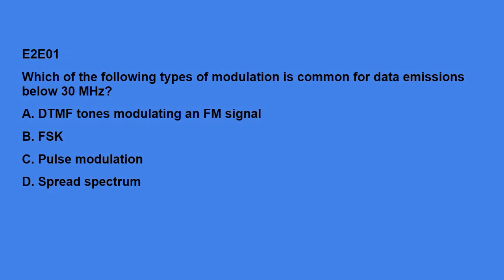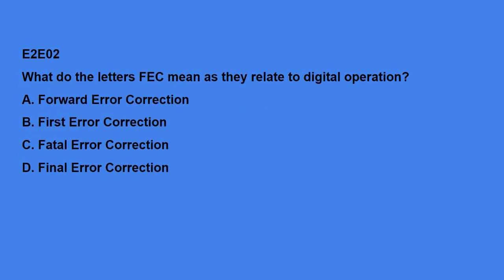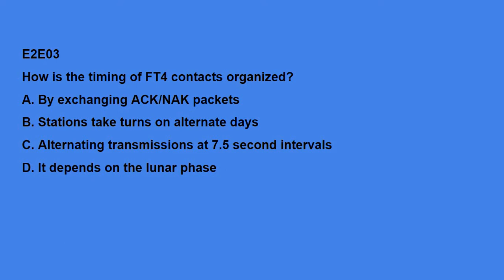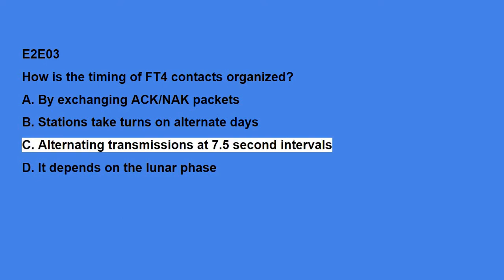E2E covers operating methods for HF digital modes. E2E01: Which of the following modes of modulation is common for data emissions below 30 MHz? FSK. E2E02: What do the letters FEC mean as they relate to digital operation? Forward error correction. E2E03: How is the timing of FT4 contacts organized? Alternating transmissions at 7.5-second intervals.